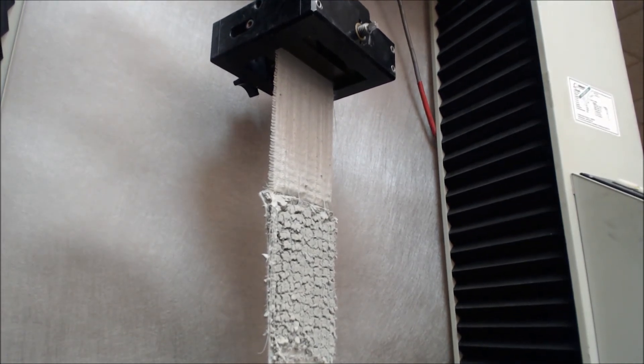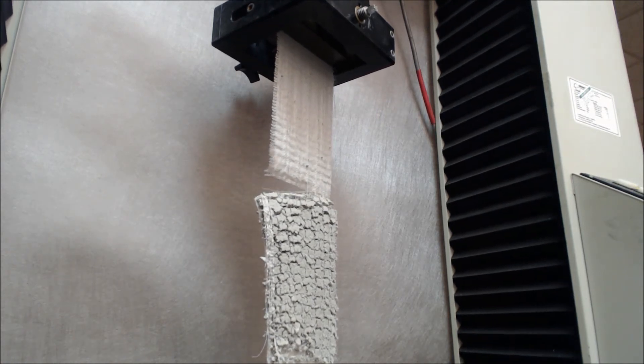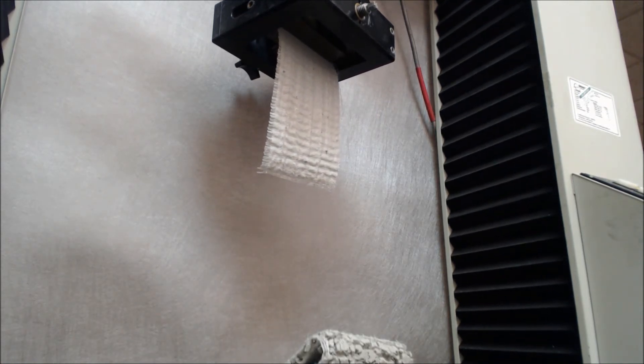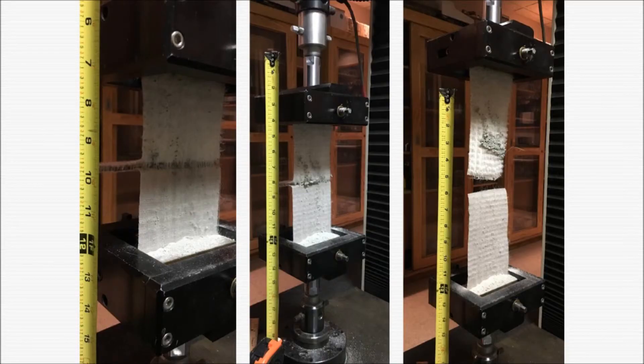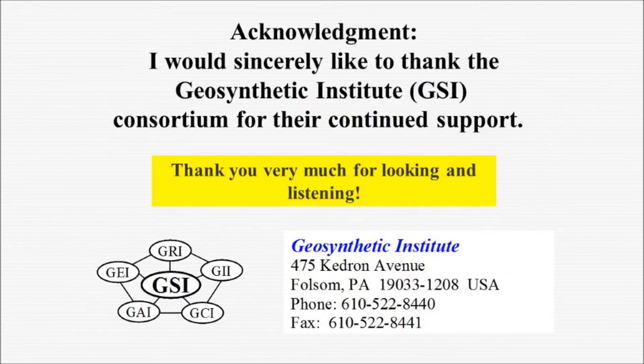You'd like to run the test until separation of the top and bottom layers as you saw here, and then stop the test. That's the test. ASTM D as in David, 6496 GCL peel for the GRI GCL 3 specification. Thank you for jumping in!